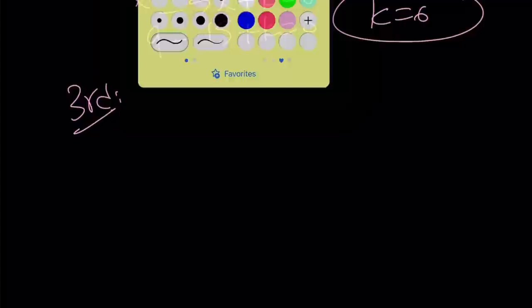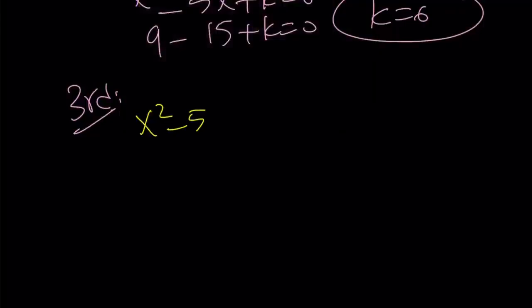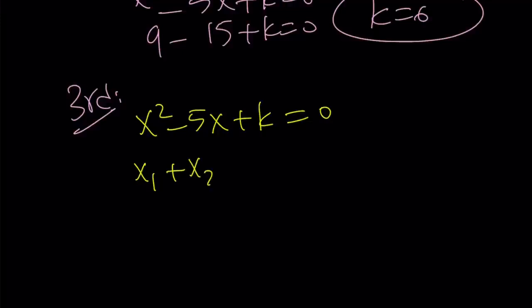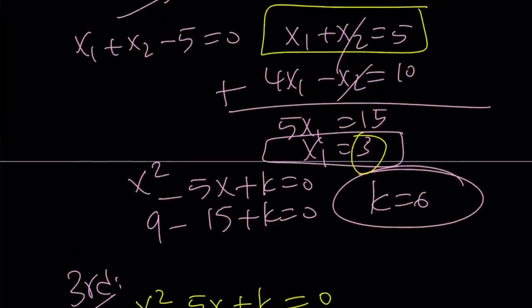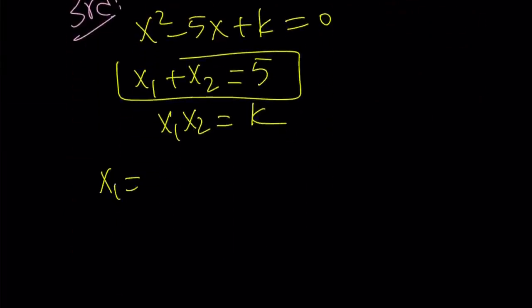The third method, like I said, is very similar to the second method because we arrive at the same thing, but it's much faster because we use Vieta's formulas. Vieta's formulas give us the relationship between the roots and the coefficients. So x1 plus x2 equals negative b over a, which is 5. The product is x1 times x2, which equals k. This gives us the same result as before — x1 equals 3 — and therefore k equals 6 as before.